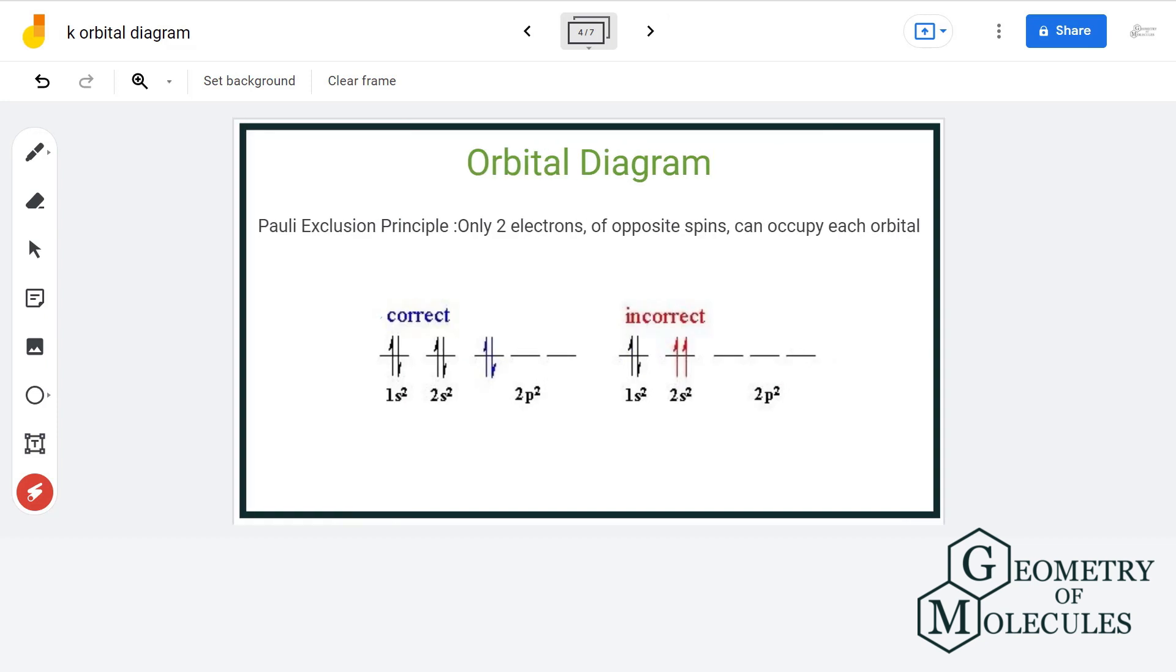The third and last rule is Pauli's exclusion principle that states the arrangement of two electrons in any orbital. It states that there can be maximum of two electrons in an orbital and that two should have opposite spin. No two electrons with same spin can occupy a single orbital as shown here. That is incorrect.